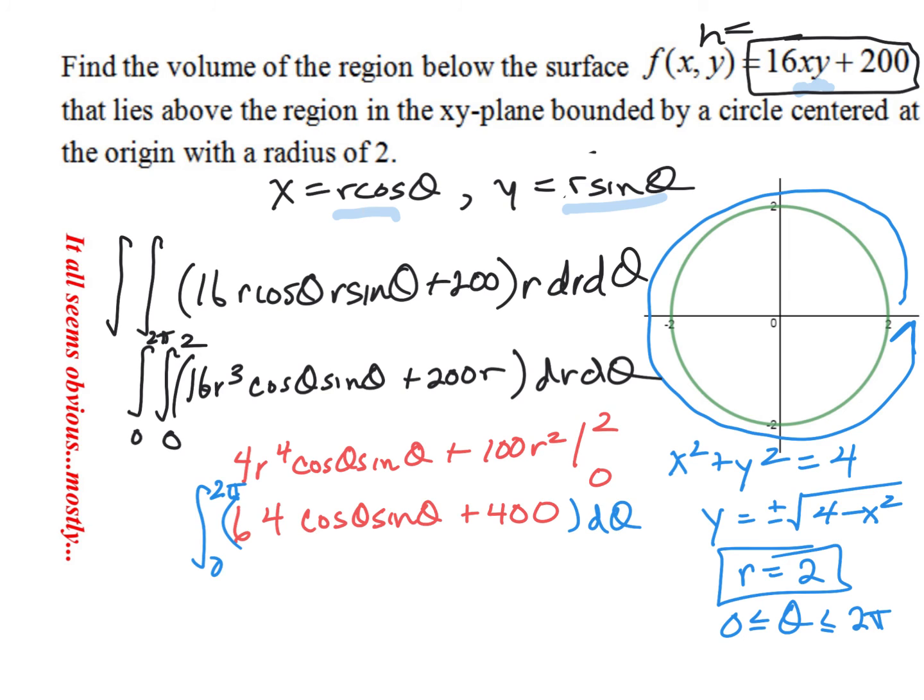Now, the one thing to just kind of be aware of is, at this point, it will not be uncommon to kind of have to think about some trig identities. You know, there's, I guess, some of these you could maybe do some substitution. You know, this, of course, just antiderivative would be 400 theta. You could feel free to use technology to finish this off. You know, you could type this in because now it's just down to a single integral. You could use a TI-83 or TI-84 to do it very easily.